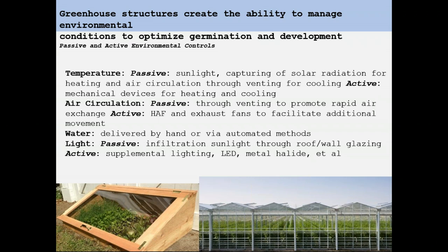Air circulation is part and parcel with heating and cooling. Passive air circulation includes things like ridge vents, end wall vents, and side vents or roll-up curtains that allow air to move from outside into the facility. Active air circulation comes through exhaust fans and horizontal airflow fans. The horizontal airflow fans are particularly useful because those can be run even when your greenhouses are completely closed up, pushing and circulating air within rather than bringing outside air in. Even that can be very valuable in working against the presence of damping off organisms.